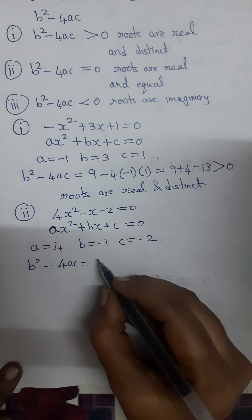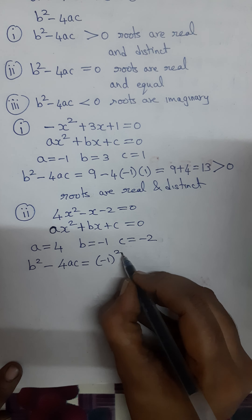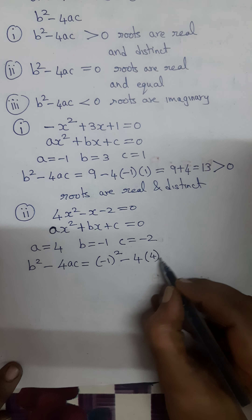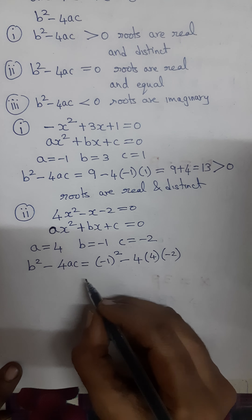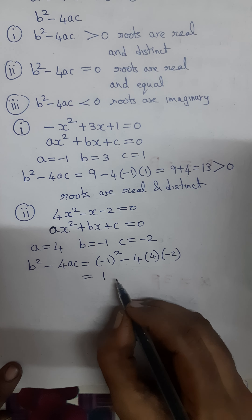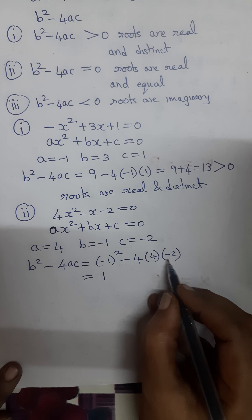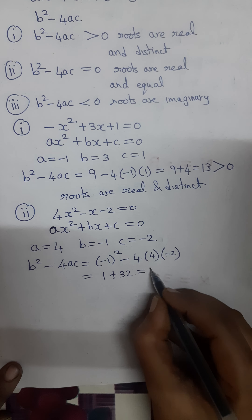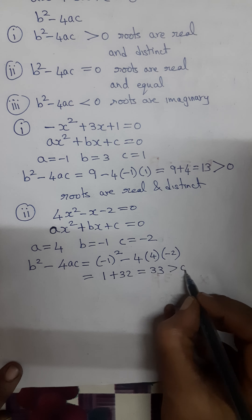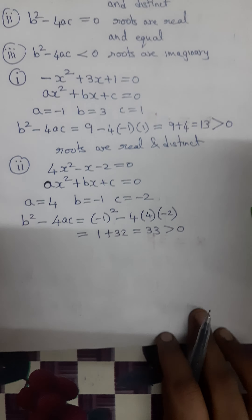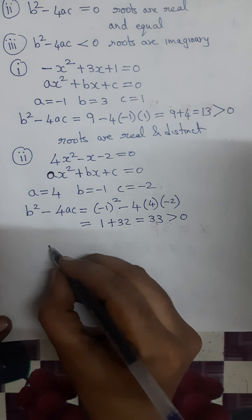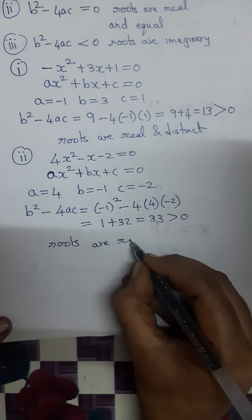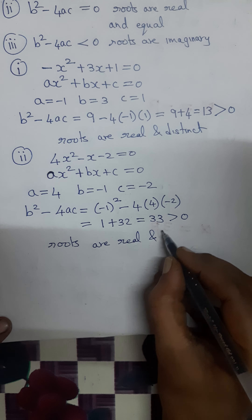b² means (-1)² = 1, minus 4 into a which is 4 and c which is -2. (-1)² is +1, and multiplying those three numbers gives 32, so 1 + 32 = 33. Since 33 is a positive number greater than 0, the roots are real and distinct.